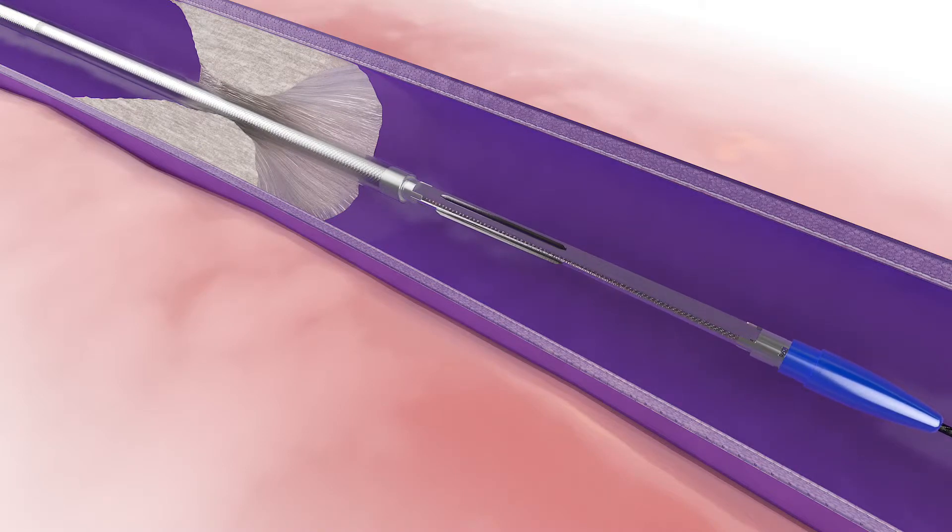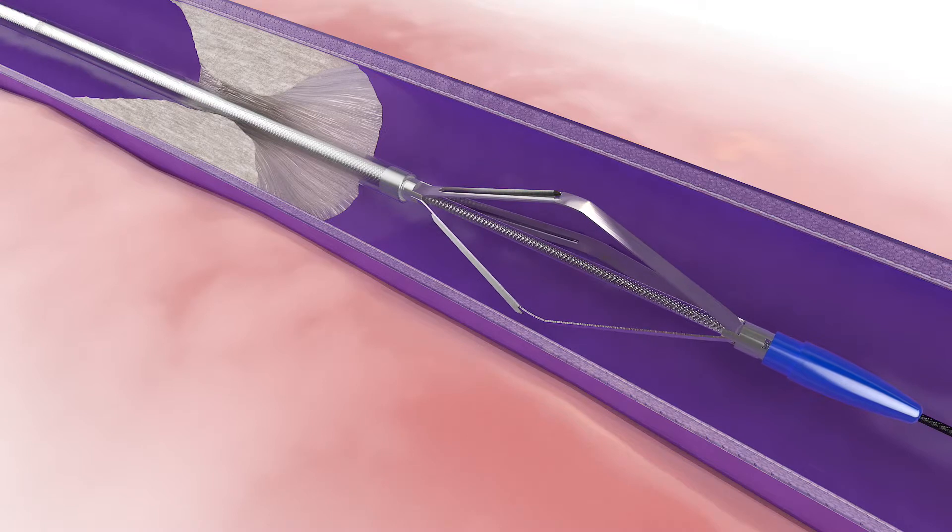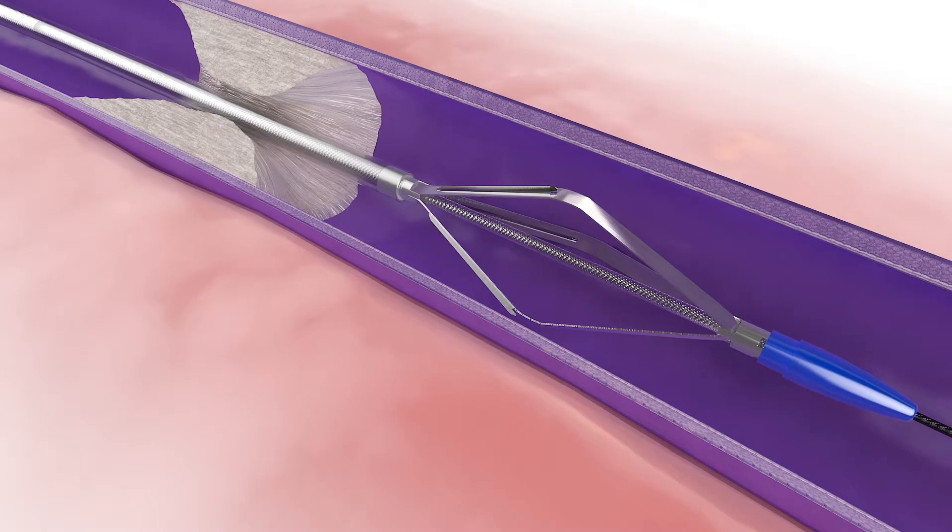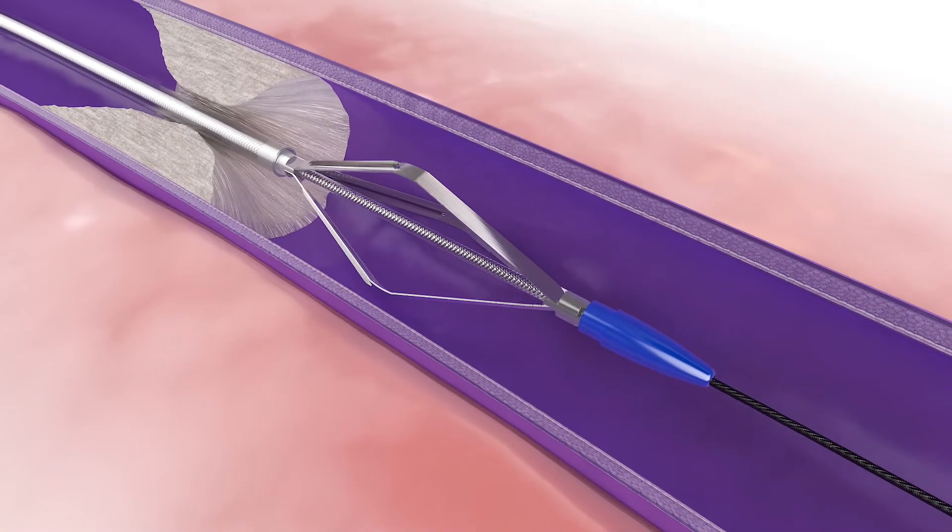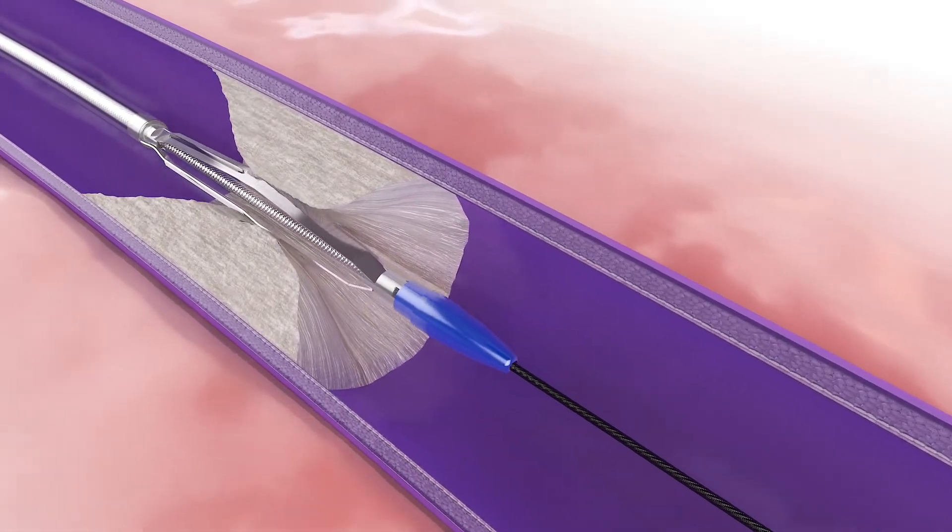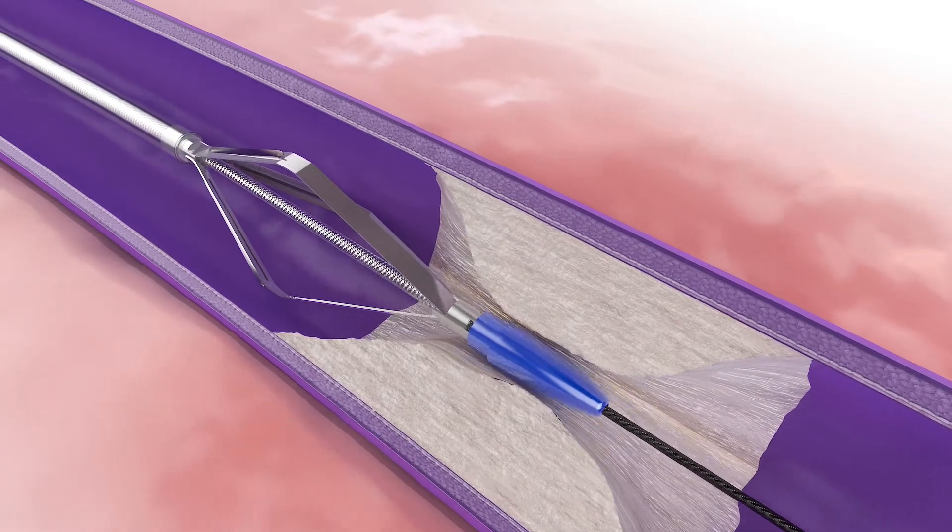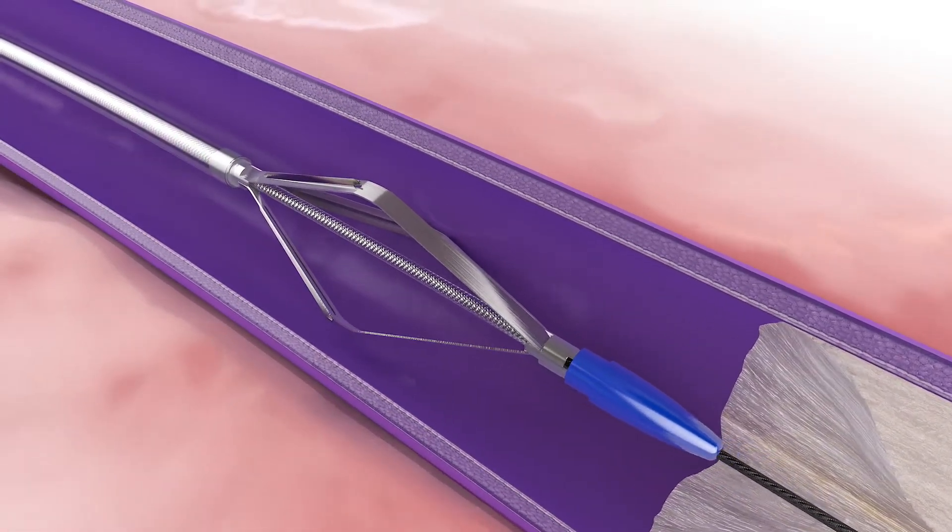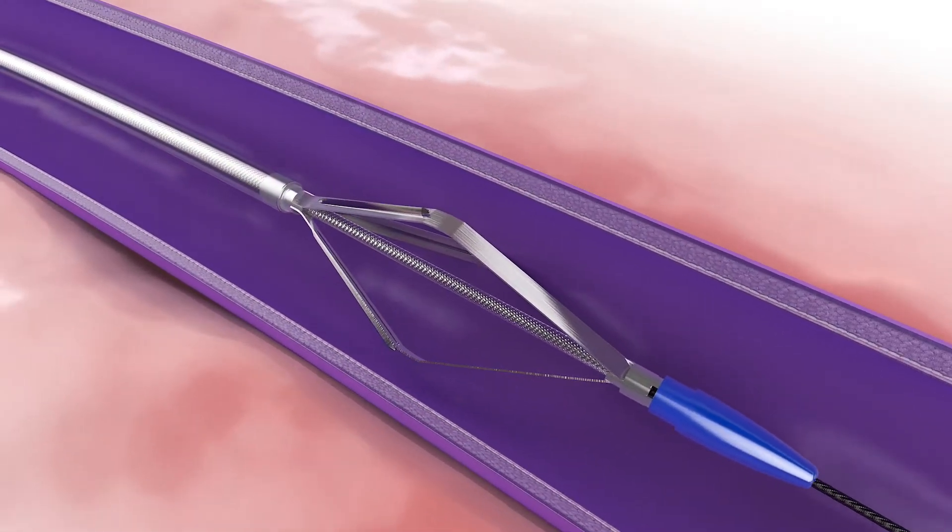Pull back the element actuator to expand the vessel prep element. The vessel prep element will expand up to 5.5 mm in diameter. The vessel prep element, regardless of degree of expansion or compression, always exerts an outward expansion force of 1 atmosphere to ensure constant and consistent contact with the lesion.